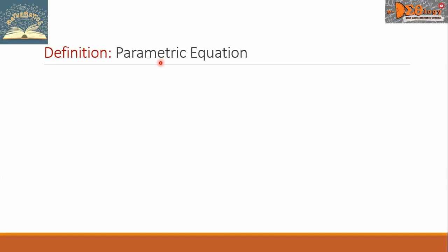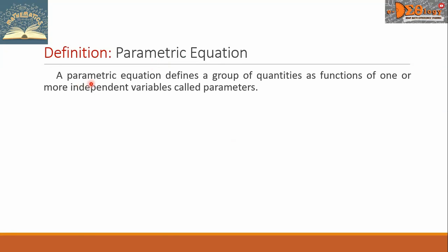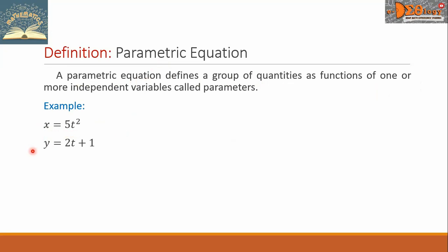Let us first define parametric equation. A parametric equation defines a group of quantities as functions of one or more independent variables called parameters. For example, we have here a parametric equation: x equals 5t squared, y equals 2t plus 1. In this equation, we call t as the parameter.